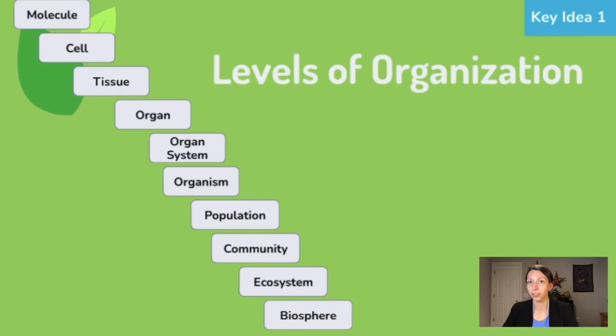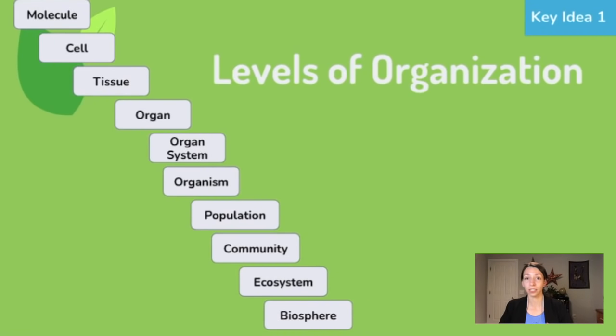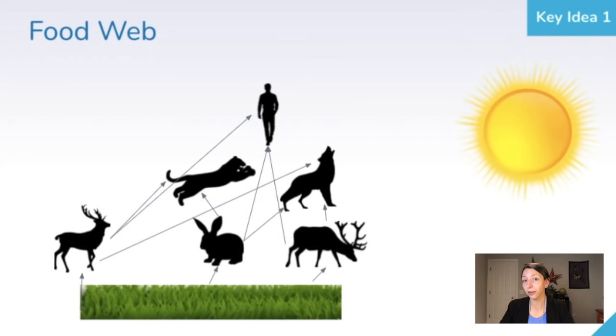The first thing you probably want to refresh yourself on are our levels of organization in life. Remember, life is organized. It's one of our characteristics of life. We know that a group of organisms of one species in one location is a population, and populations can be categorized by functions that they serve. Right here, we're looking at a food web.